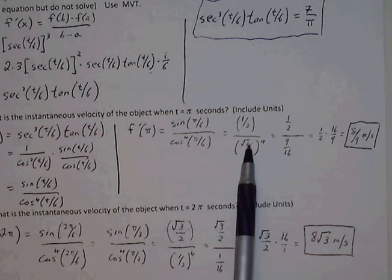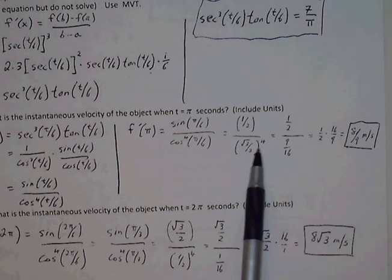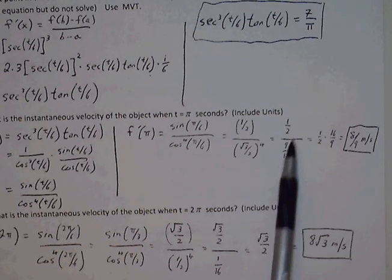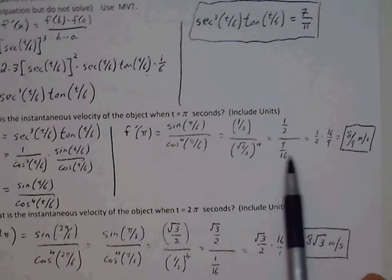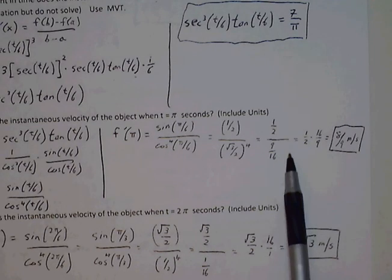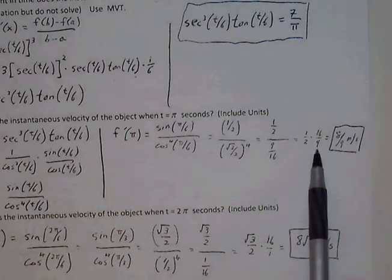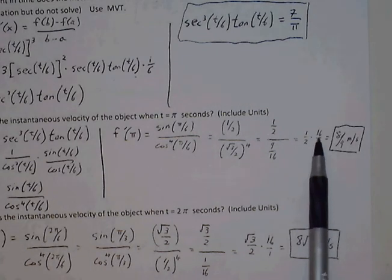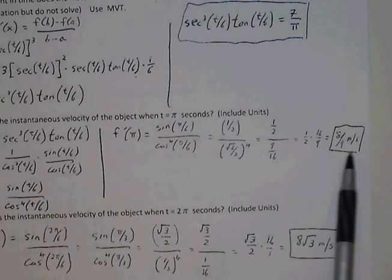So this will be square root of 3 to the 4th is 9. 2 to the 4th is 16. If I want to divide a complex fraction, I can move the 9 over 16 to the top by multiplying by its reciprocal. So 1 half times 16 over 9 will simply be 8 over 9 meters per second.